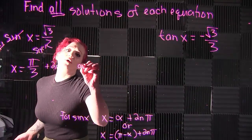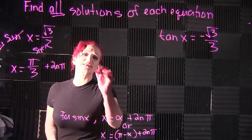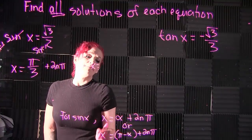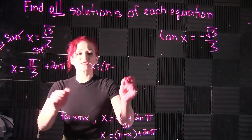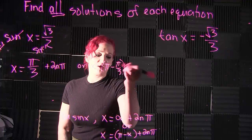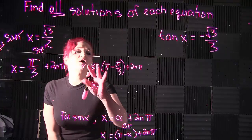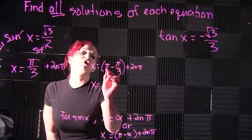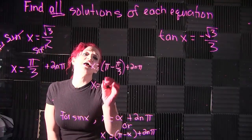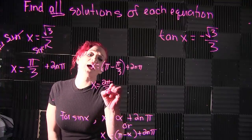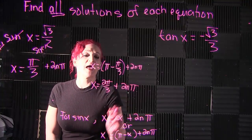We are also told that x equals π minus alpha. So that's going to be π minus π over 3 plus 2nπ. If we take π minus π over 3 and calculate this, that gives us 2π over 3 plus 2nπ.